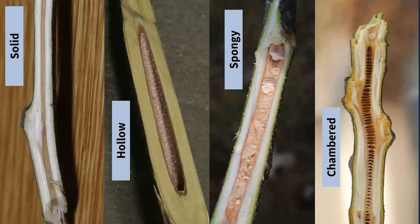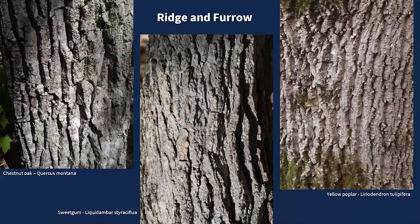Moving from twig characteristics to the other major characteristics we look at for winter tree identification: bark. There are a bunch of different types and terminologies for bark. One of the most common bark styles is called ridge and furrowed bark — usually somewhat thick bark with identifiable ridges or high points running vertically, with deep furrows in between. Many of our trees fall into this ridge and furrow style.